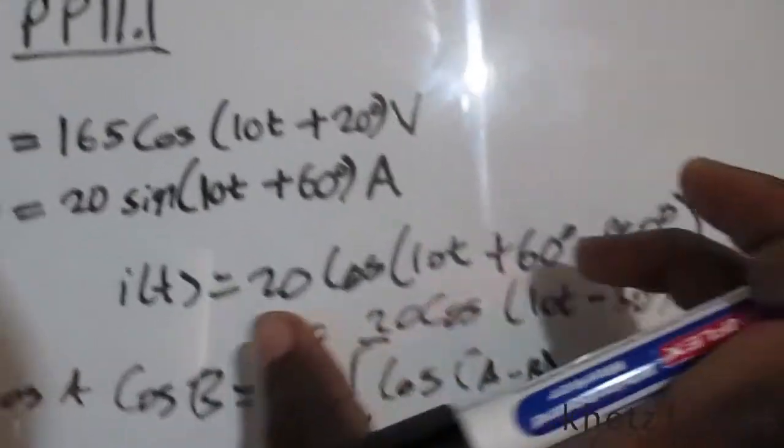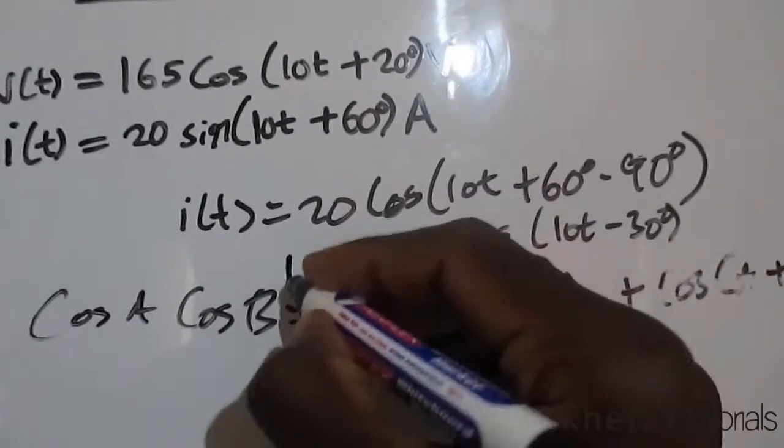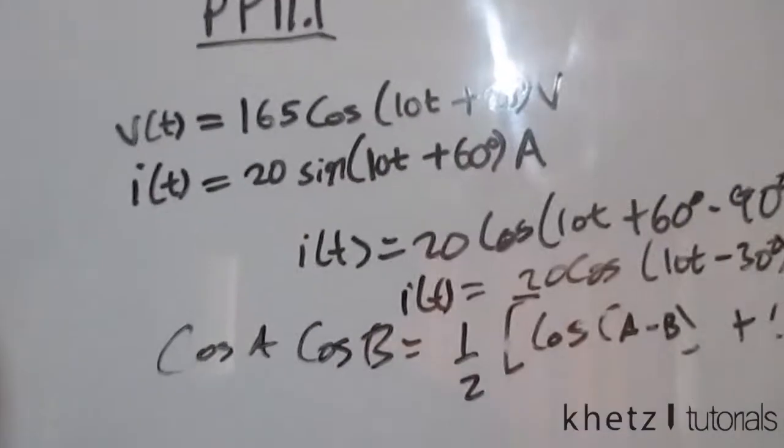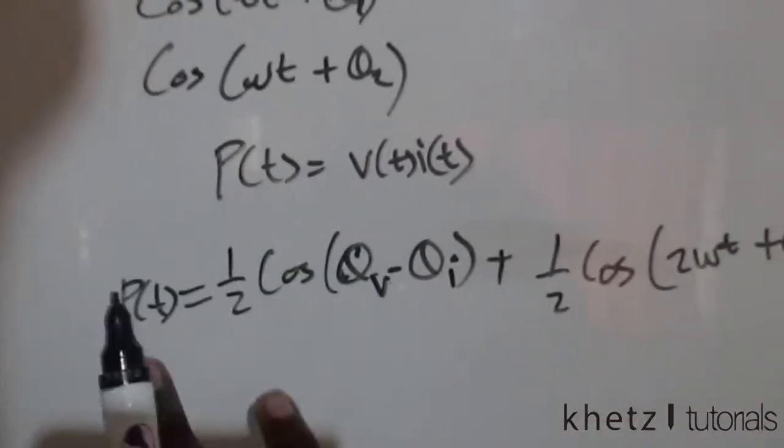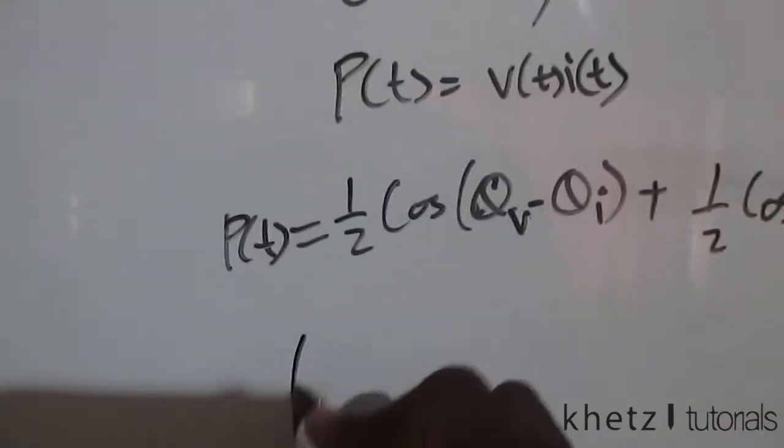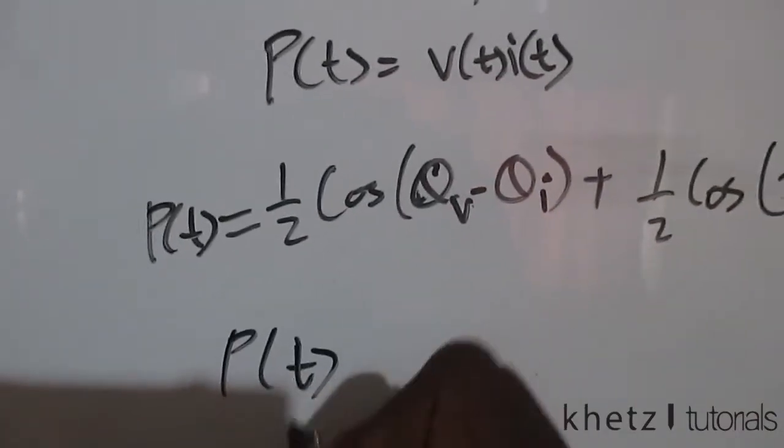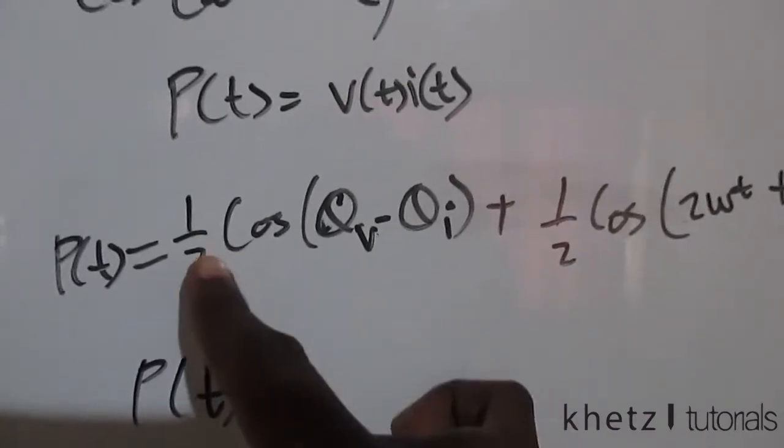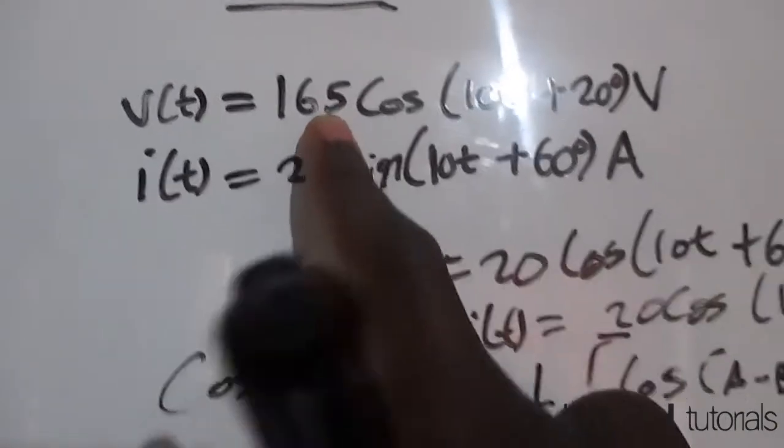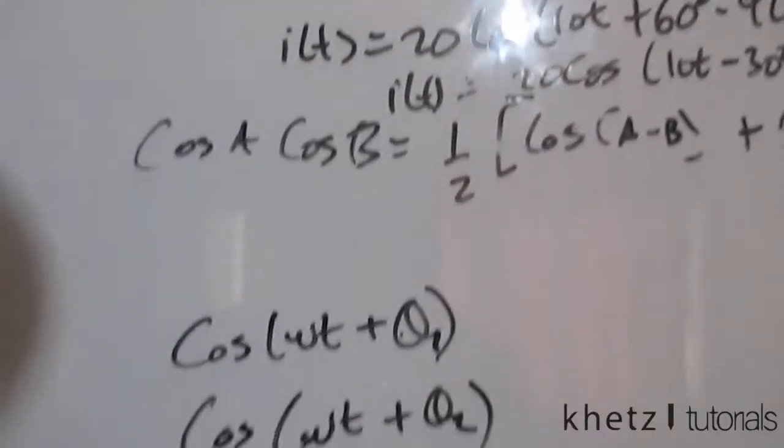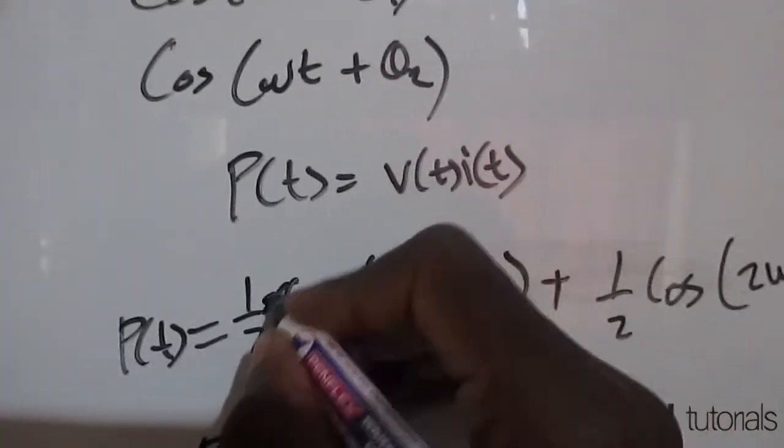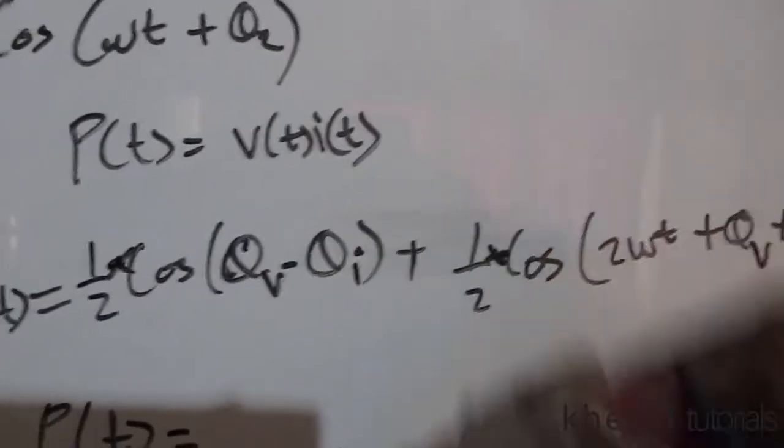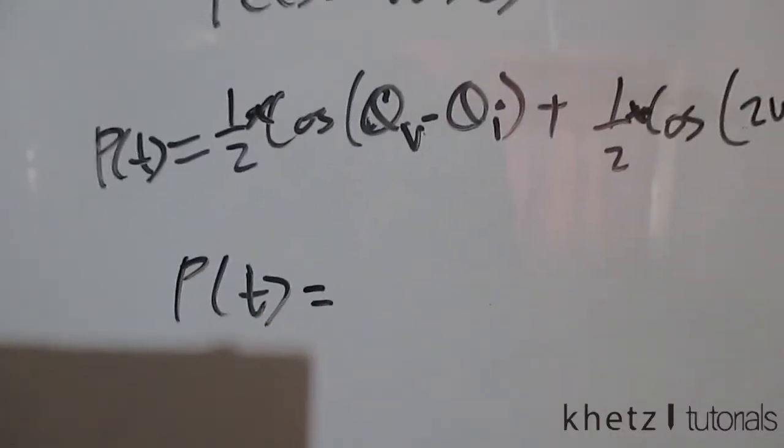Now substituting everything, now we have both in cosine form, we have i(t) in cosine form and we have v(t) in cosine form. Now substituting back into here which is our instantaneous power, not forgetting the amplitudes. We have amplitudes here, we have 165 and 20, you have to put those into account so they're going to come here and here, those are the amplitudes you shouldn't forget.